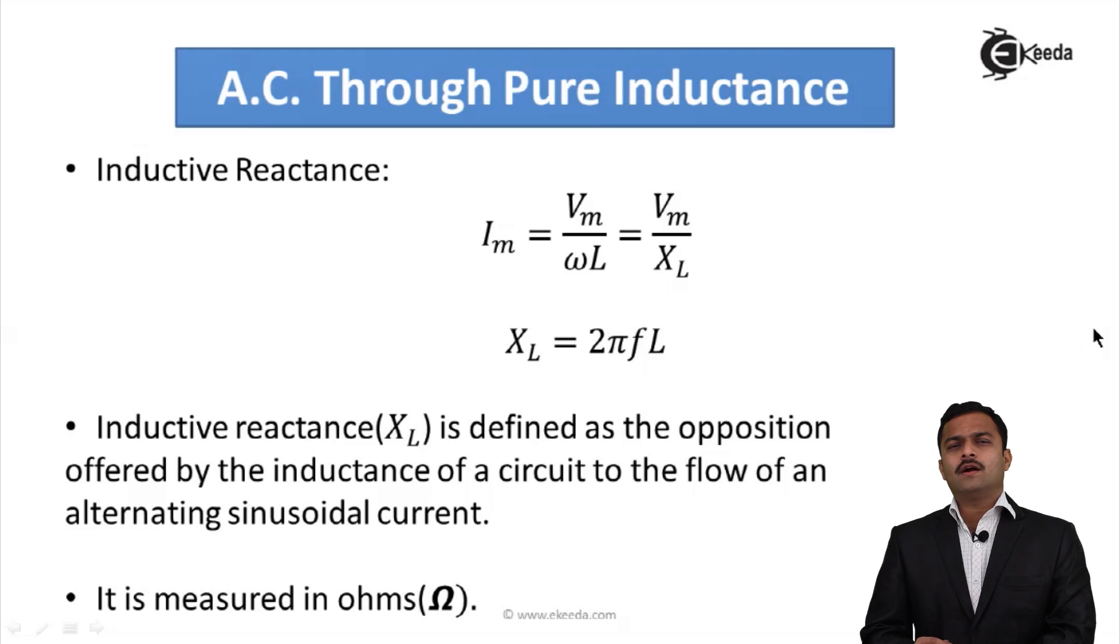Now one quantity we have introduced, that is XL. XL is nothing but ωL and that is given by 2πfL. So what is XL? XL is nothing but inductive reactance. It is defined as the opposition offered by inductance of a circuit to the flow of alternating sinusoidal current.